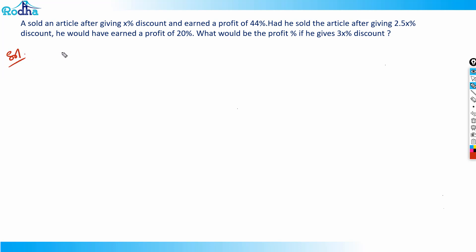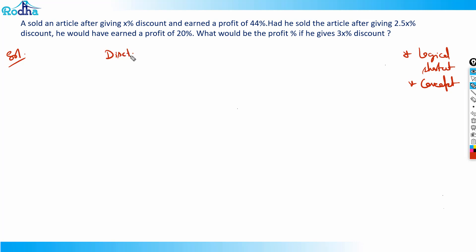We've learned a very logical shortcut — a fantastic way to solve such problems. It's a great concept. So in the first case, a discount of x percent is given, and the profit earned is 44 percent.